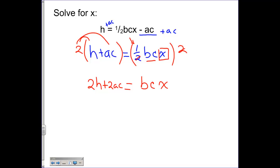Now, at this point, I'm going to divide by bc all at once. The b and the c will cancel each other out, and that will leave you with x equaling 2h plus 2ac over bc.